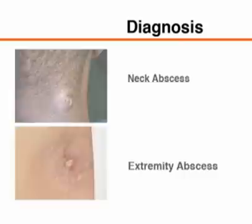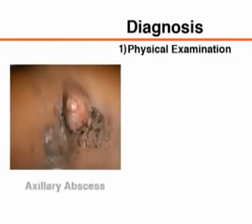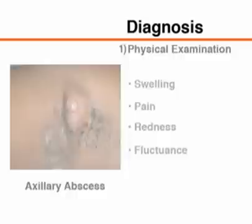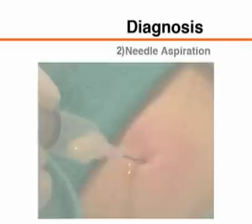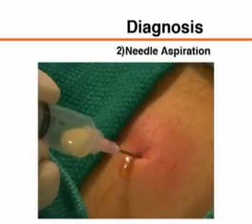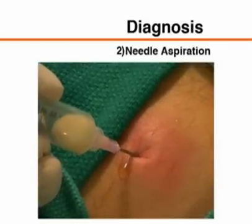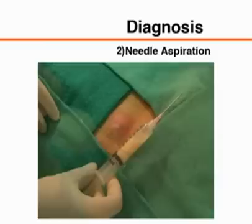Diagnosis of a skin abscess is the first step in a successful procedure. This can be accomplished in three ways. Physical examination of the affected area will often allow diagnosis of an underlying abscess based on swelling, pain, redness, and fluctuance. Spontaneously draining skin abscesses are also amenable to diagnosis by physical examination alone.